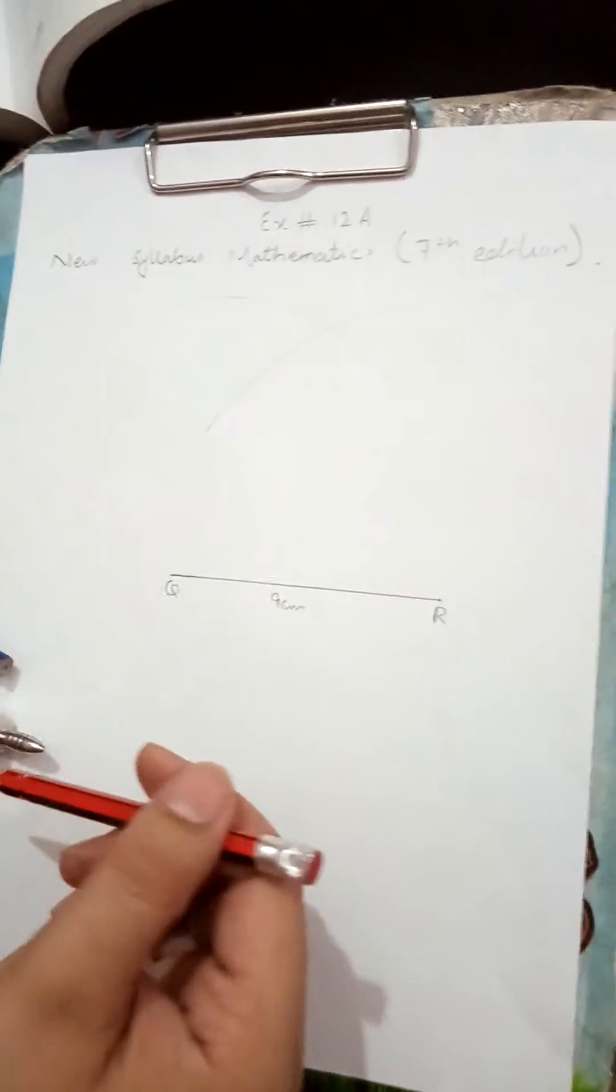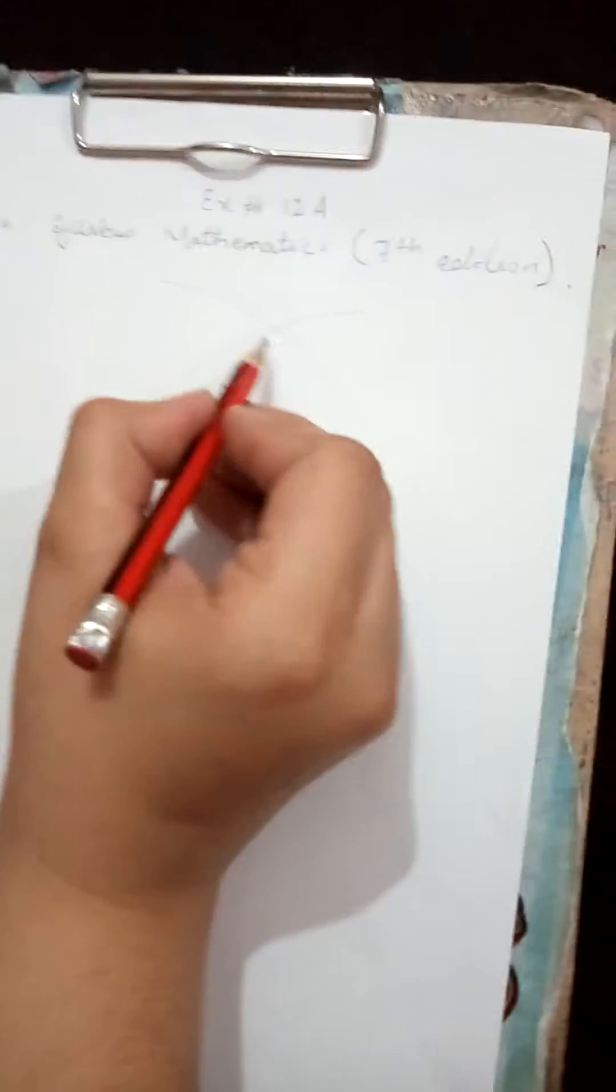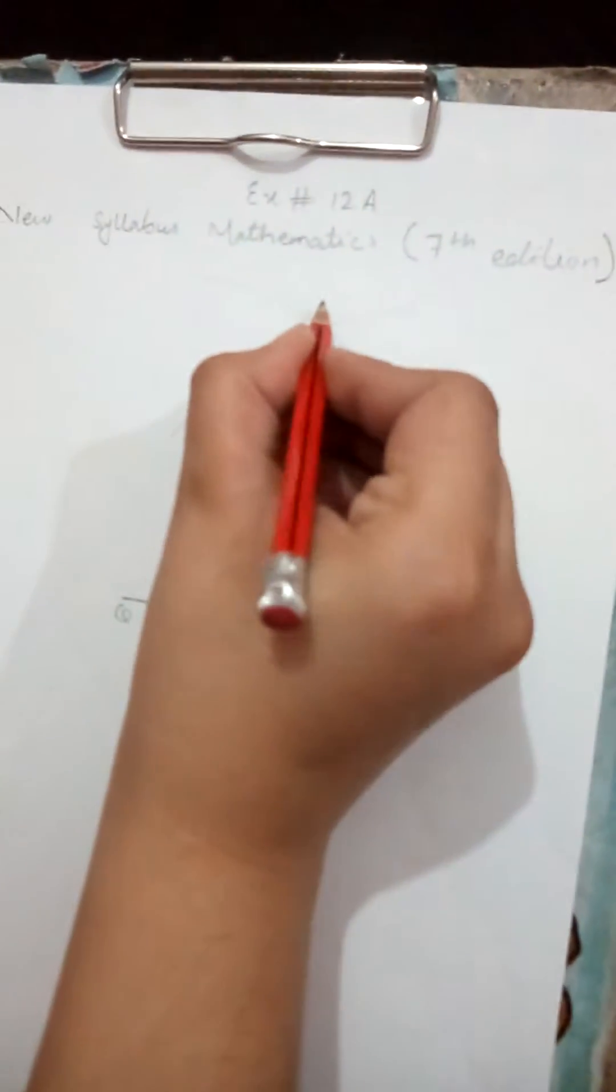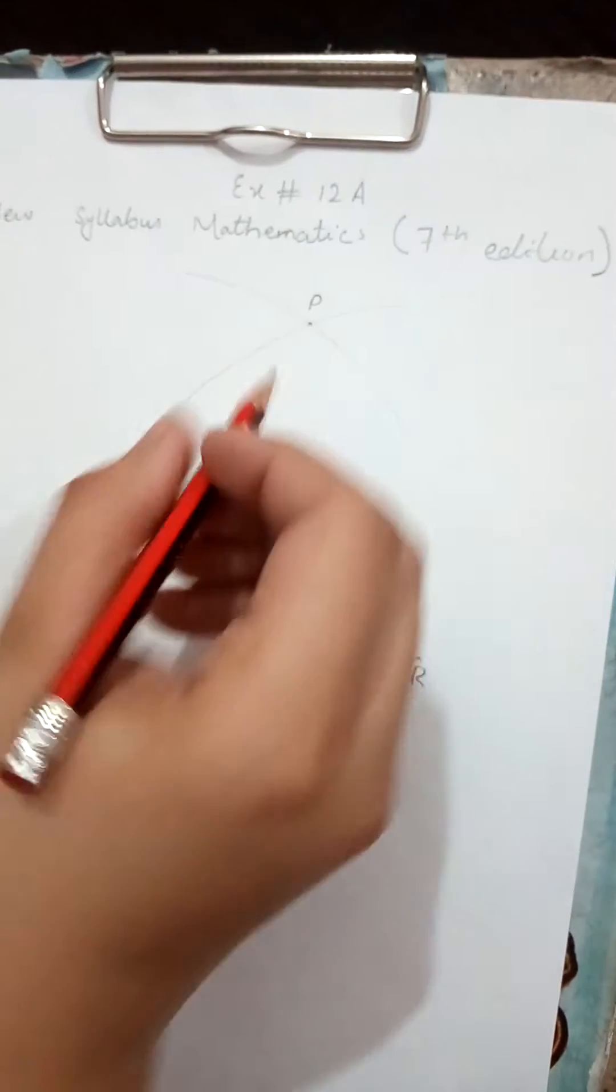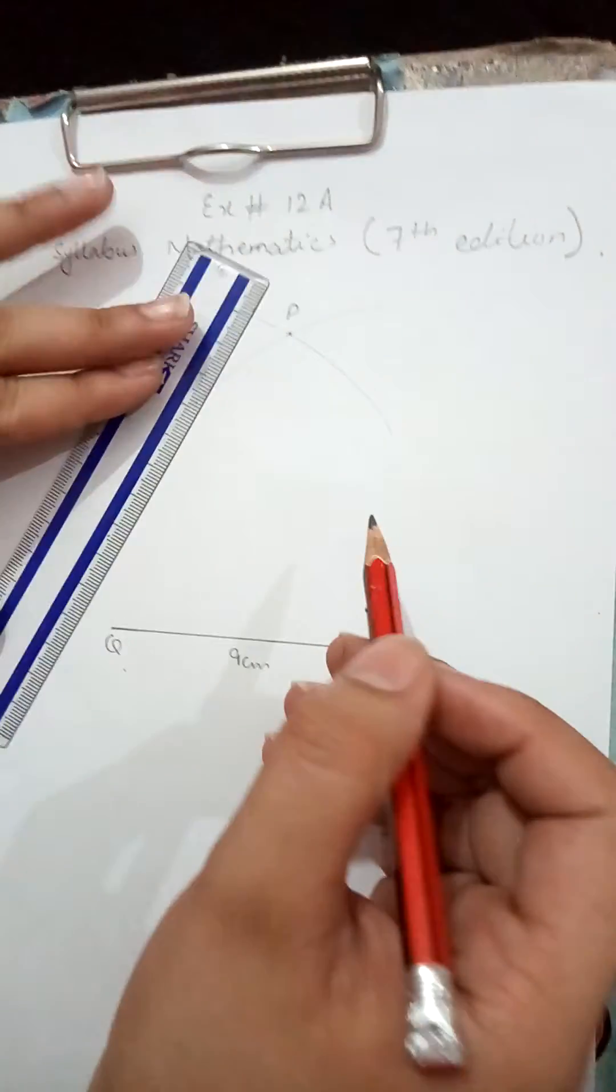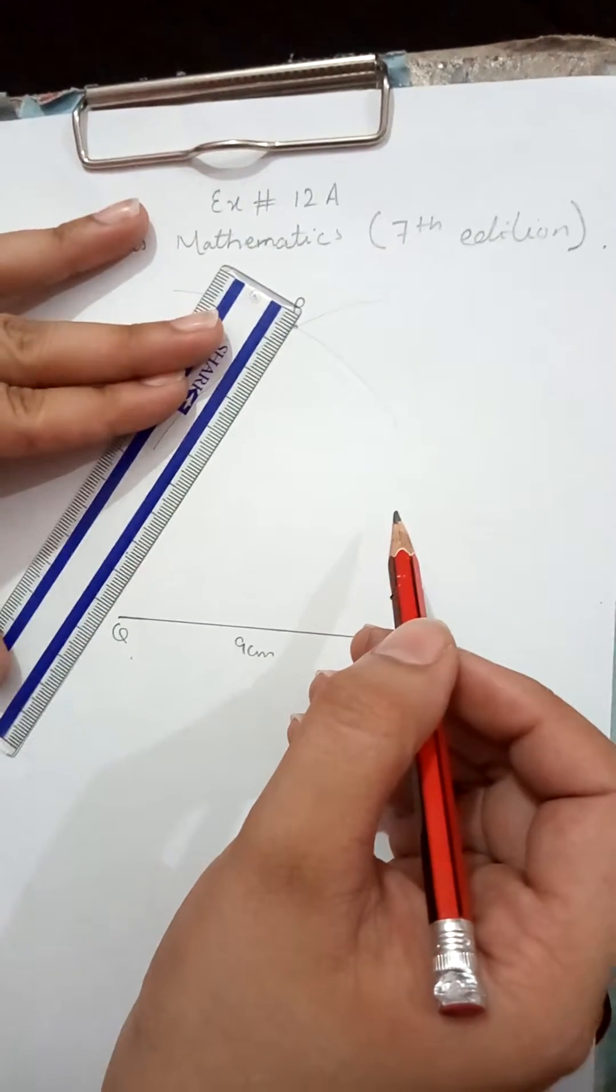After this, taking R as a center and marking arc 2. You can see the two arcs intersect each other. The point where the two arcs intersect is named as P, because we are making the isosceles triangle PQR.